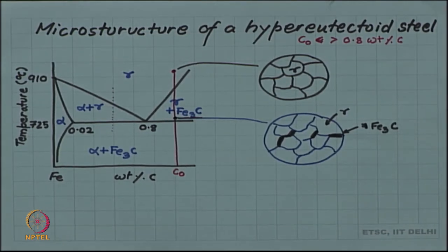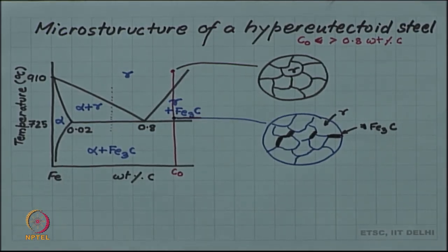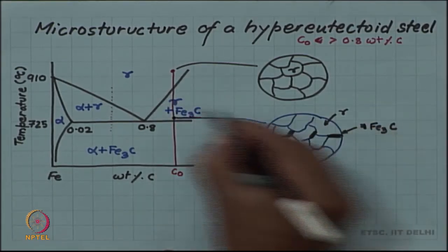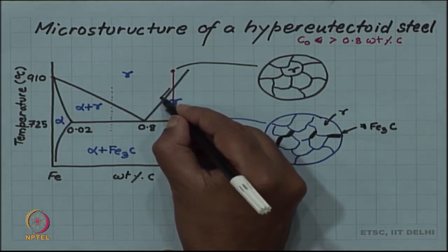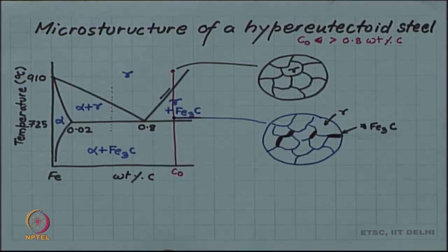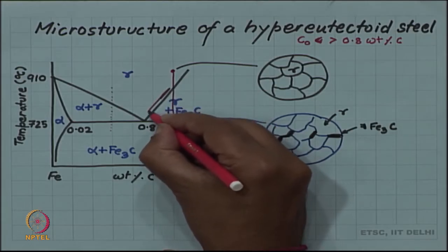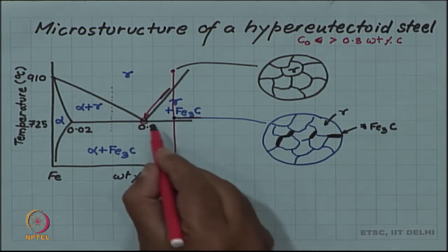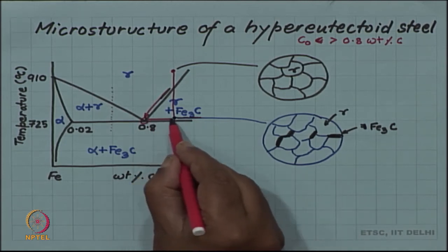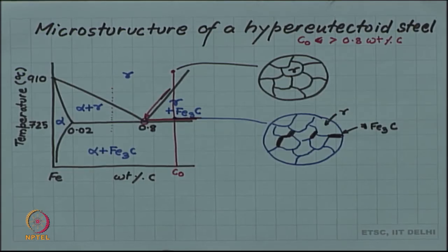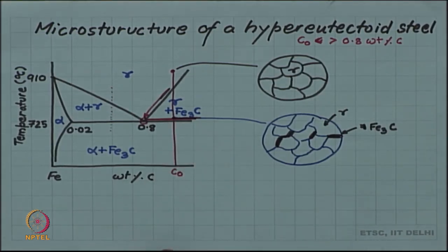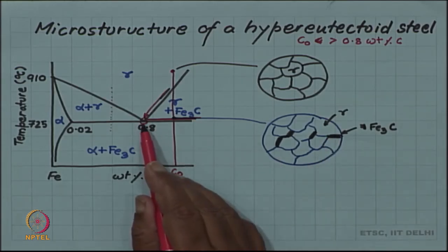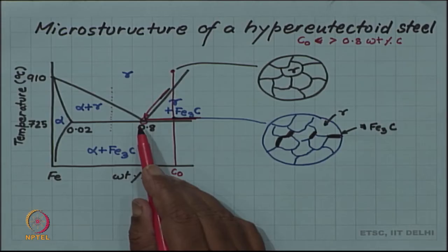Also, the austenite phase which is there, the composition will evolve and it will again evolve towards this eutectoid composition. When you will be close to the eutectoid horizontal, the remaining gamma will be at the eutectoid composition and at eutectoid temperature.